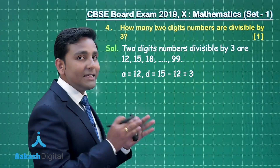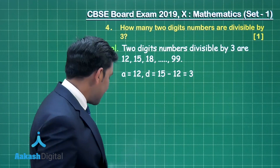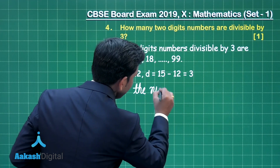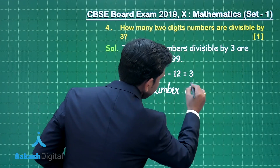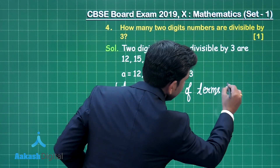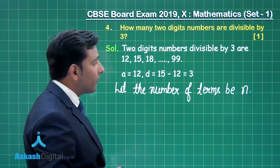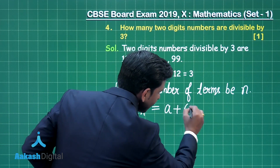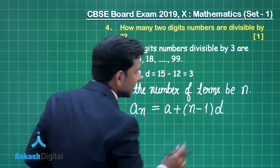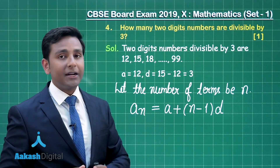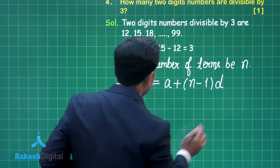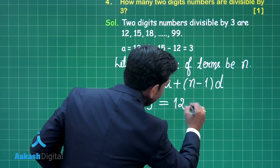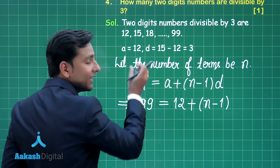Using this arithmetic progression we can easily find the number of terms in this given series. Let the number of terms be n. The nth term will be the last number 99, and using the formula aₙ = a + (n − 1)d — which gives the nth term of any arithmetic progression — we substitute: nth term = 99, first term a = 12, and common difference d = 3.